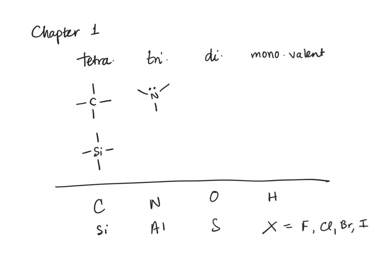Note the lone pairs on nitrogen and aluminum. If we take one step back, we also have a trivalent system with boron, although it has no lone pairs. So there's your basic setup for the elements we're going to need to use in this course.